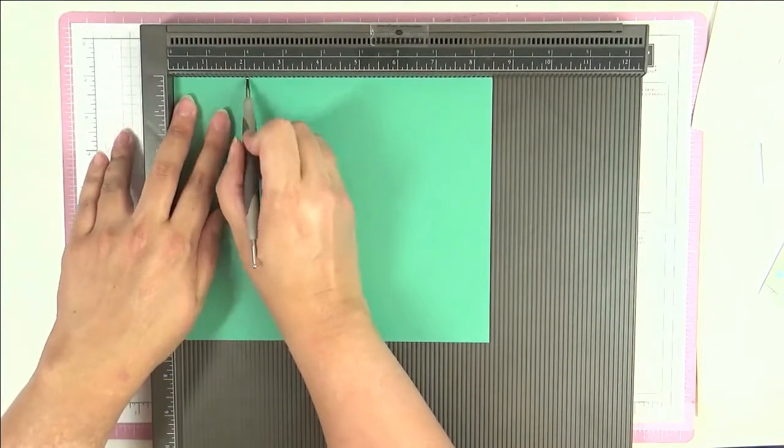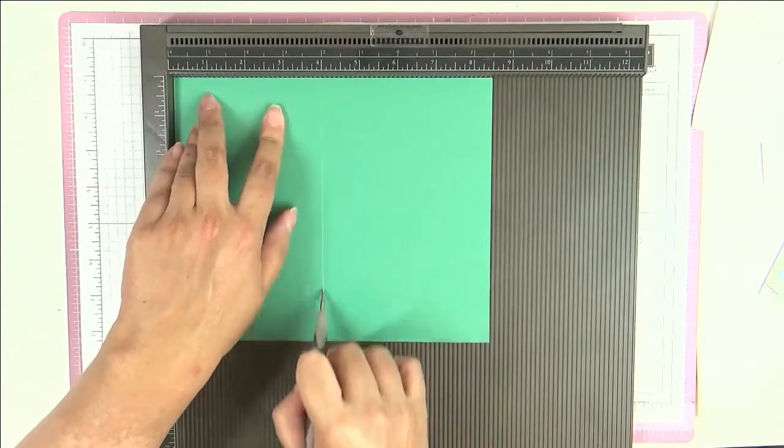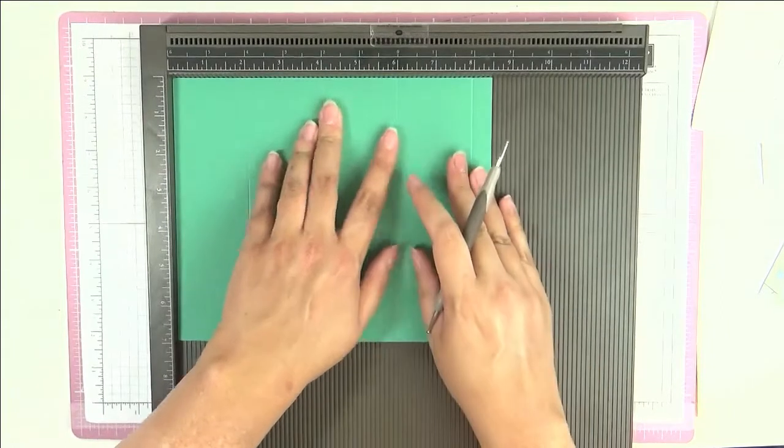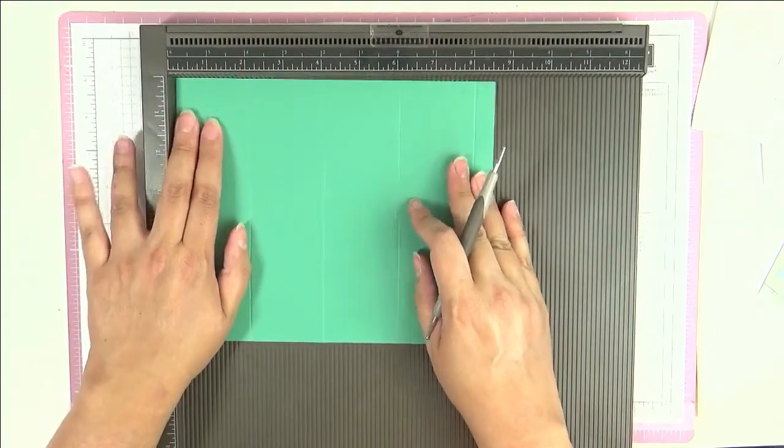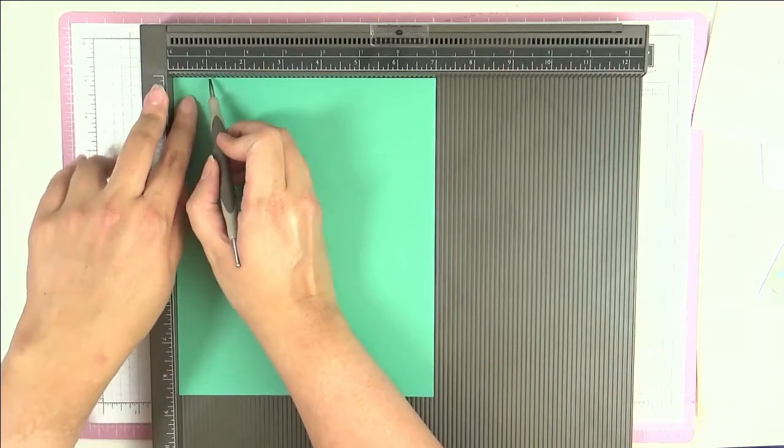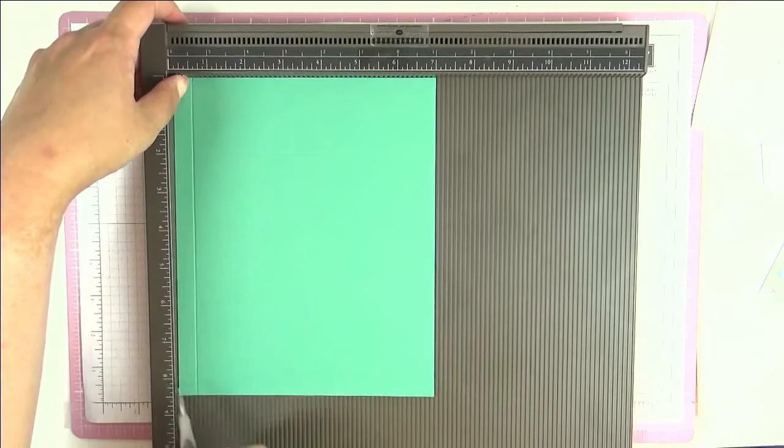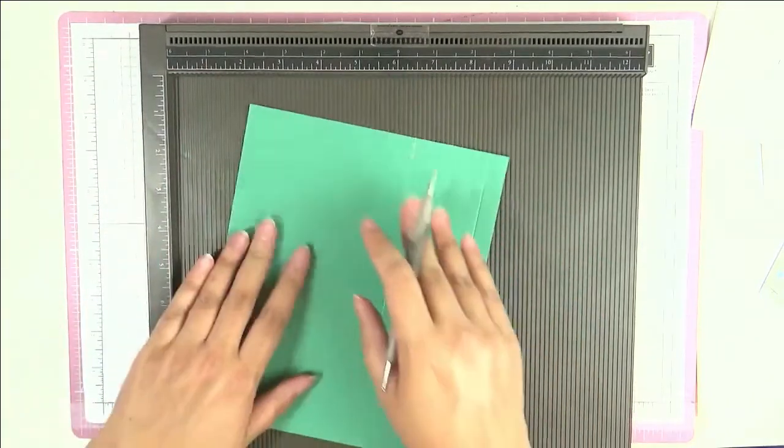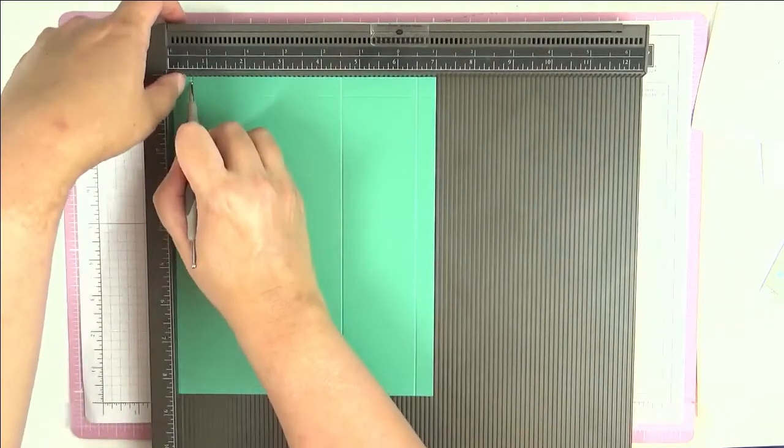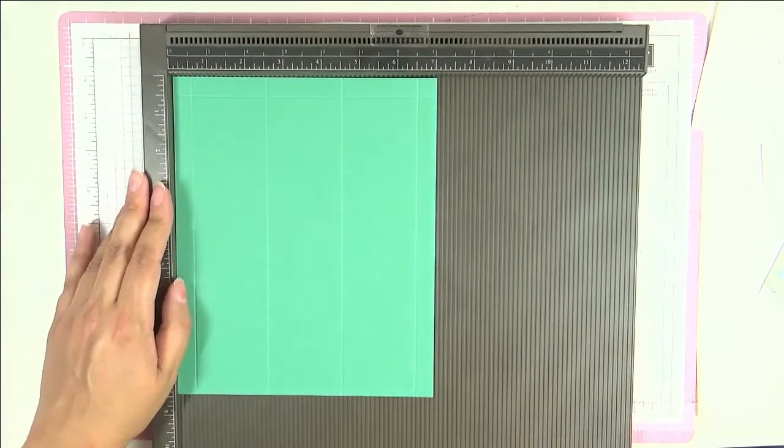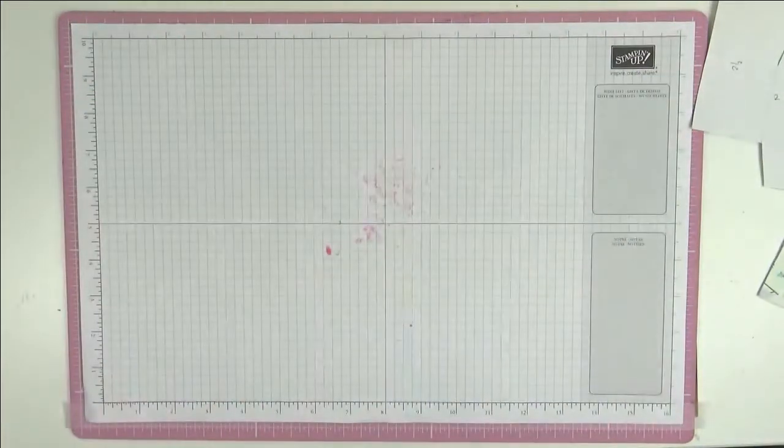We're going to start with some scoring. We're going to score at 2 inches, 4 inches, 6 inches and 8 inches, all on this 8.5 inch side, the long side. Twist it round to the short side, and you are going to score at half an inch, and then again at 2.5 inches. 90 degree turn, half an inch, and again at 2.5 inches.